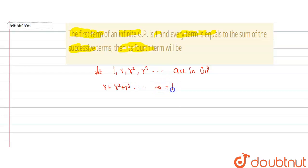We know that sum of infinite GP is given by a/(1-r), where a is the first term and r is the common ratio.